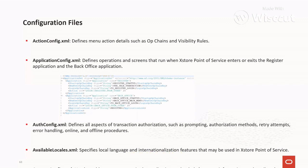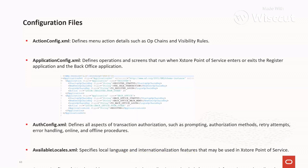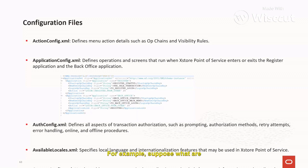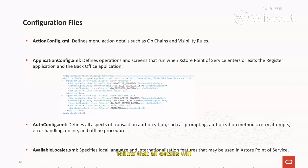The auth_config.xml file defines all aspects of transaction authorization, such as prompting, authorization method, retry attempts, error handling, and online and offline procedures. This file mainly covers configuration related to EFT link — for example, timeout settings for specific cards and the procedure to follow if there is no response from the EFT link.